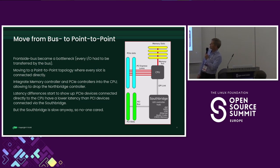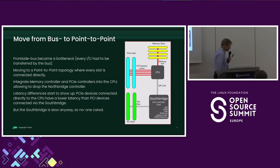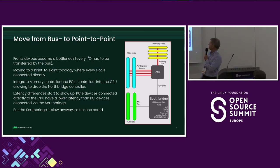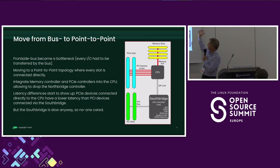So they switched from the bus to a point-to-point topology. That's what PCI Express is — essentially the big difference between PCI and PCI Express, where PCI is a bus system and PCI Express is a point-to-point star topology. And to make that even faster, they said: going via a different chip is actually getting quite expensive, so just move everything into the CPU, move the PCI controller directly into the CPU — then we have lower latency and are more efficient talking to PCI devices.